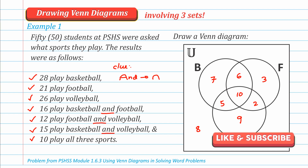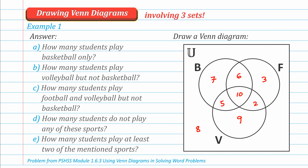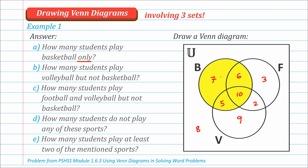Now that we've drawn the Venn diagram, we can analyze it and answer the questions. Question A: How many students play basketball only? Take note of the word 'only.' The whole circle B represents all basketball players, but some also play football, some play all three, and some also play volleyball. Therefore, the students who play basketball only is just this one region — 7. The answer to letter A is 7.